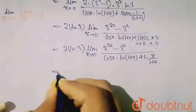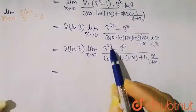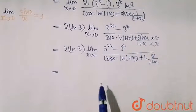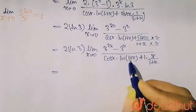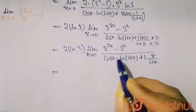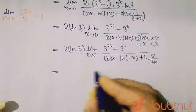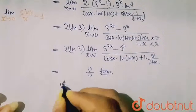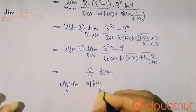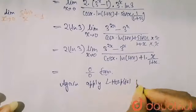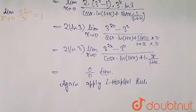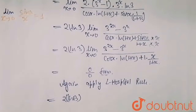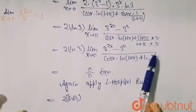Now apply the limit. Putting x = 0: 3^0 - 3^0 = 1 - 1 = 0 in the numerator. In the denominator, cos 0 · ln(1) = 1 · 0 = 0 and x upon (1 + x) also becomes 0. So again it comes in 0 by 0 form — we have to apply L'Hôpital's rule again.